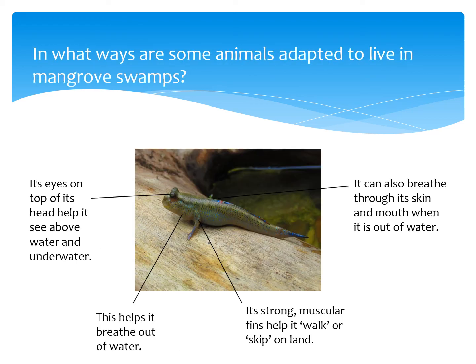The last example is: in what ways are some animals adapted to live in mangrove swamps? Mangrove swamps are habitats for animals such as saltwater crocodiles and mudskippers. A mudskipper is a fish adapted to living in water, but its eyes on top of its head help it see above and below water. Its strong muscular fins help it walk or skip on land. It also breathes through its skin and mouth, and fills the space around its gills with water rich in dissolved air to breathe out of water.